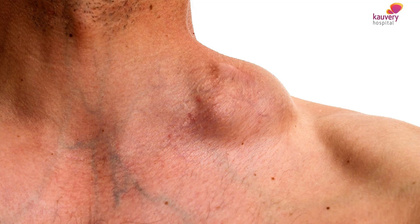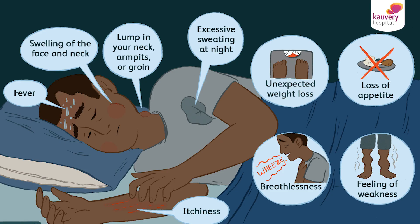Autoimmune diseases and many other risk factors also play a role. The symptoms include swelling in the lymph nodes in one or different parts of the body — such as the neck, armpits, or groin. Other symptoms include loss of weight, loss of appetite, unexplained fever, abdominal disturbances, hepatomegaly, liver enlargement, and spleen enlargement.